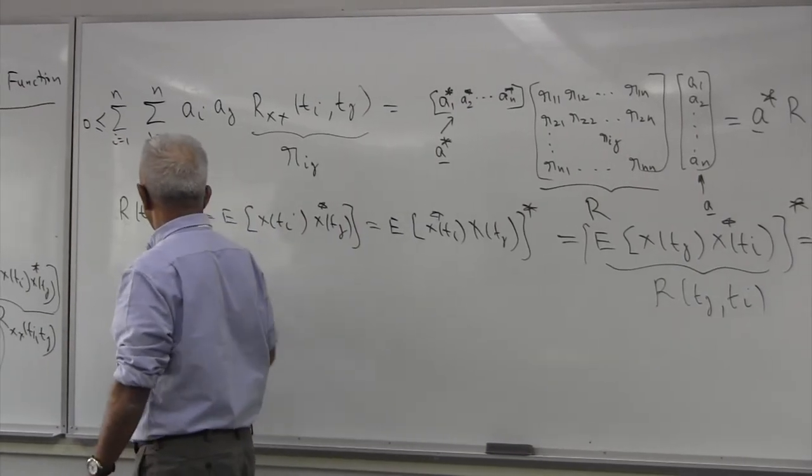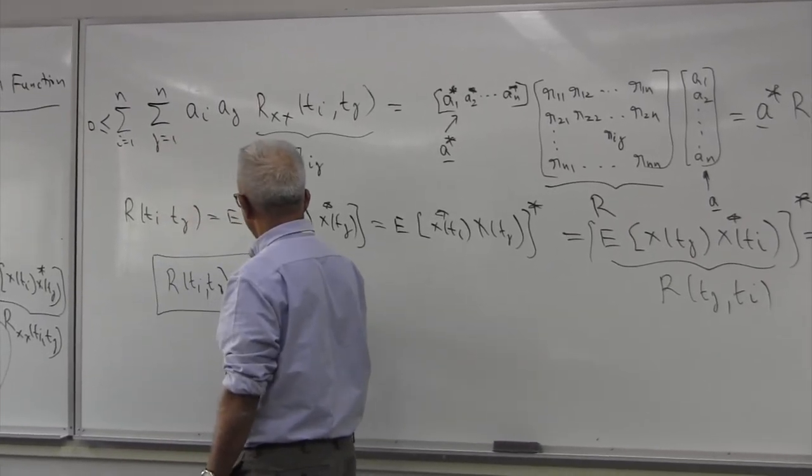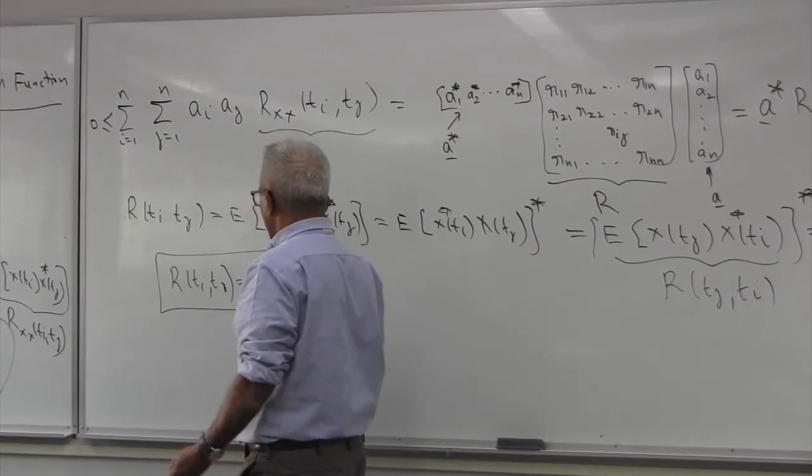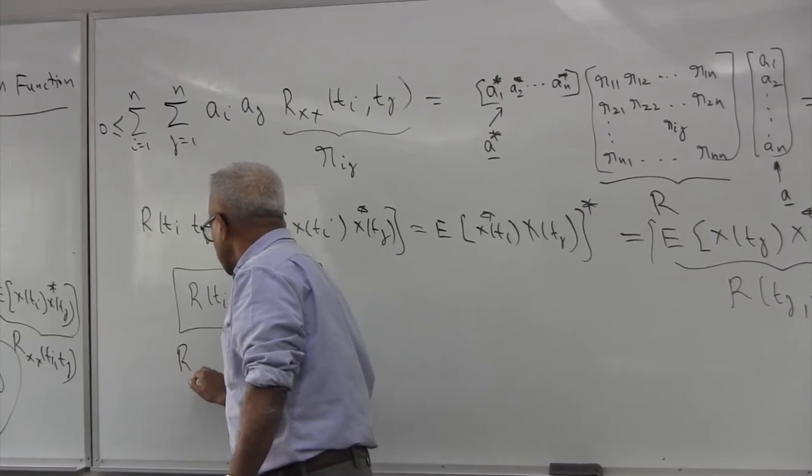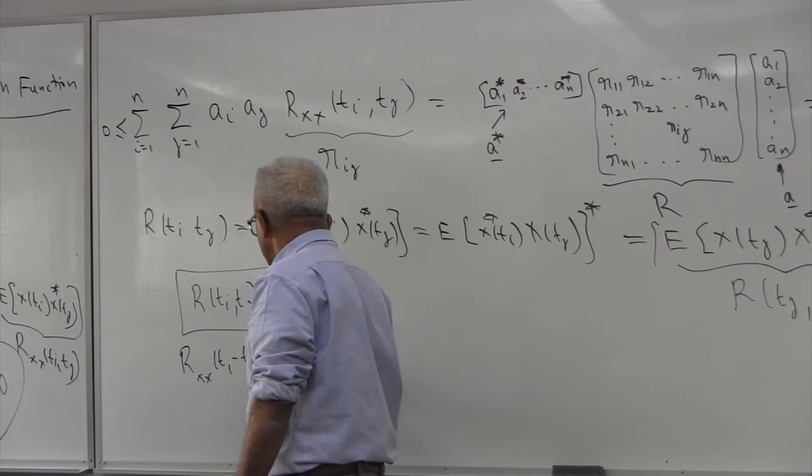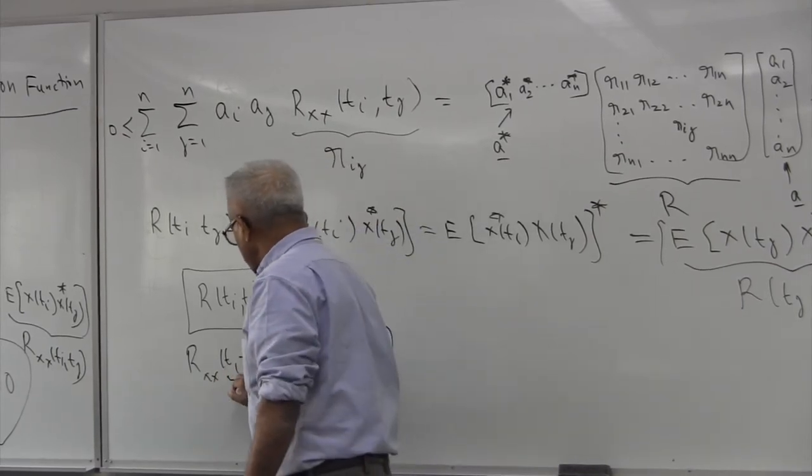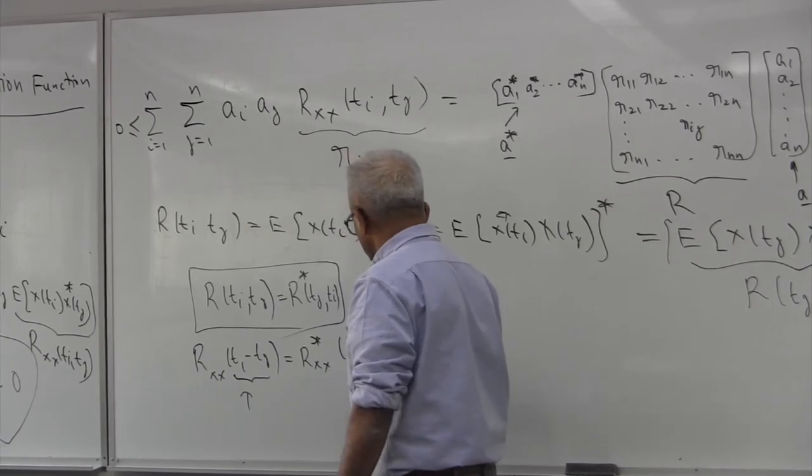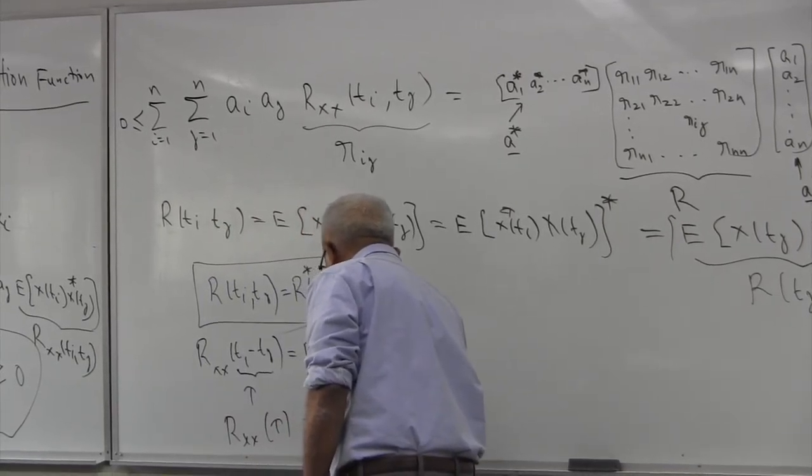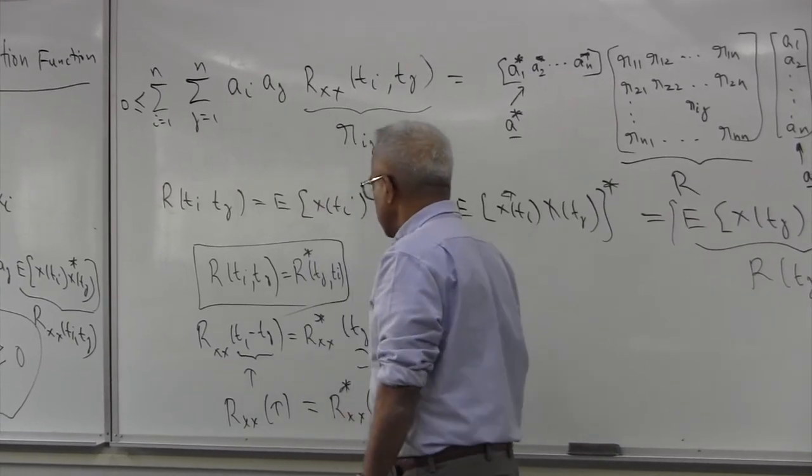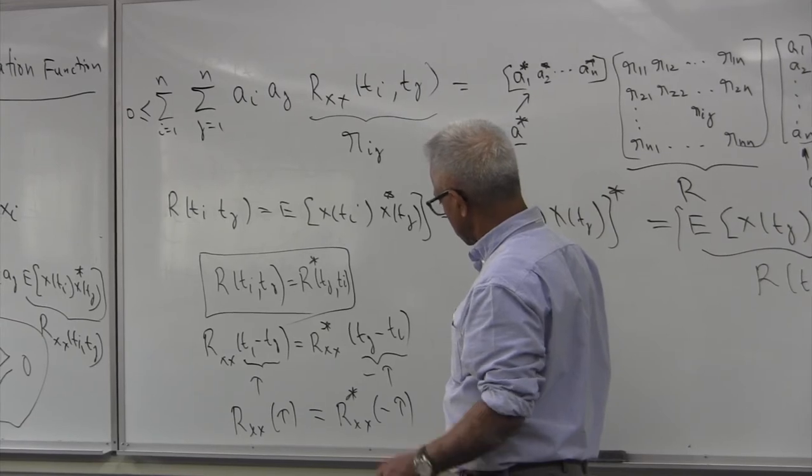So here is the property that autocorrelation function has this symmetric property. R of Ti, Tj is the same as R of Tj, Ti but with a star. Of course if the process is stationary, this becomes T1 minus T2. So Rxx(Ti minus Tj) is the same as Rxx(Tj minus Ti) star. So if we call this tau plus the distance, this becomes tau. So for wide-sense stationary processes, Rxx(tau) is of course always the same as Rxx(minus tau).